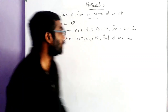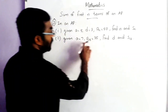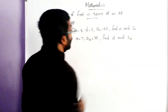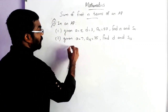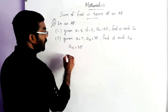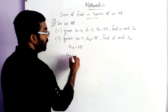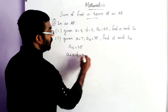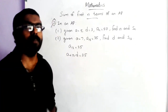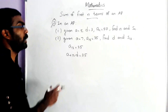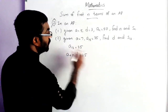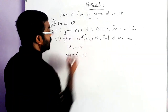Now we move on to the second sub-question. Given A is equal to 7, A13 is equal to 35, find D and S13. Here A13 is equal to 35. A13 can be rewritten as A plus 12D, which is equal to 35, using the formula A plus N minus 1 into D. So 13 minus 1 is 12. A plus 12D is equal to 35, and the value of A is 7.